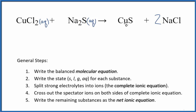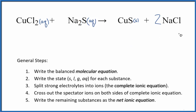Sulfides in general are not soluble. Copper 2 sulfide — that's insoluble. These two react and they form a solid. That solid sinks to the bottom of the test tube as a precipitate, so this is a precipitation reaction. Next, we have chloride here, a sodium compound, very soluble — AQ.